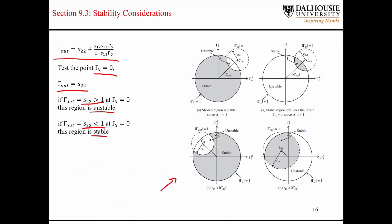What we see here is we are looking at the input stability circle in the Γ_S plane. The input stability circle can be at different positions — different distances away from the center of the circle — getting closer and closer to the center. In the previous example, the center of the Γ_S or Γ_L planes existed outside of the output or input stability circles, but that might not always be the case. The center of the Smith chart might coincide with the interior portion of the input or output stability circles.